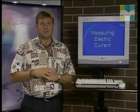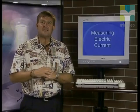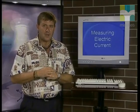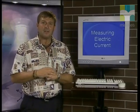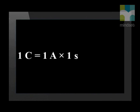We already know that electric current is the rate of flow of charge through a conductor. Charge is measured in coulombs and has the symbol capital C, while current is measured in amperes and has the symbol capital A. One coulomb is defined as the amount of charge that passes a point in a circuit when a steady current of one ampere is maintained for one second. This can be written as one coulomb equals one ampere multiplied by one second.